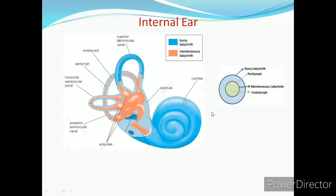Membranous labyrinth is surrounded by an almost similarly shaped bony labyrinth. In between bony and membranous labyrinth, a fluid is present which is called as perilymph. While membranous labyrinth, it is filled with a fluid called endolymph.